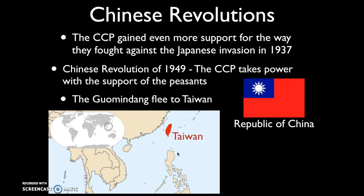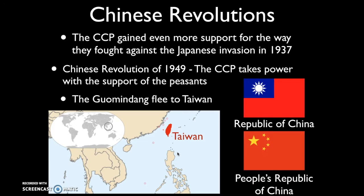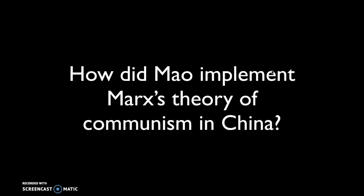There is a second revolution in China in 1949, and the CCP takes power with the support of the peasants. The Guomindang is forced to flee to Taiwan, where they establish the Republic of China — not to be confused with the People's Republic of China. Essentially there are two Chinas: Big China, the People's Republic of China, controlled by the Communist Party; and Little China, the tiny island currently controlled by the descendants of the Guomindang. For U.S. policy purposes, we technically only recognize Big China — it's called the One China Policy.